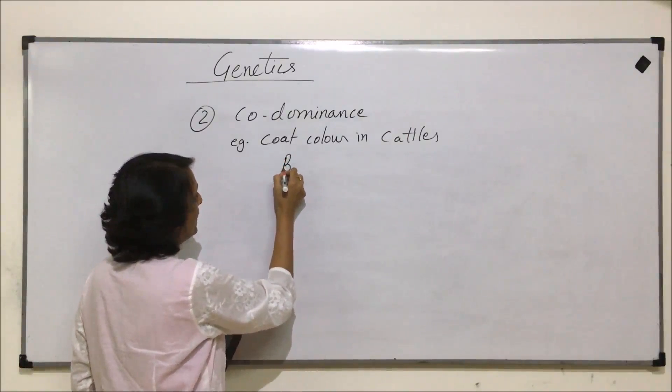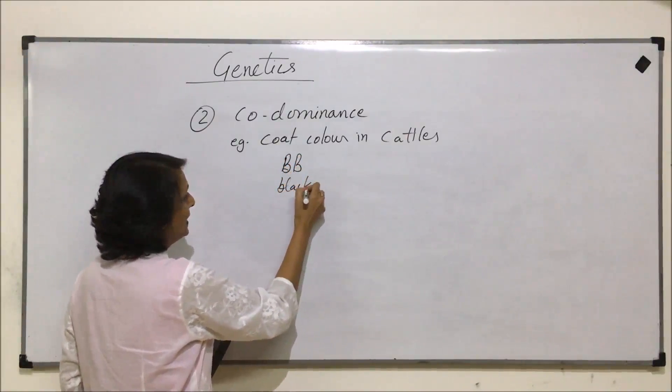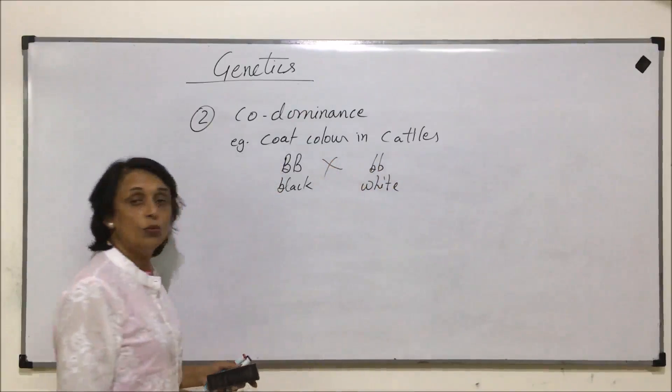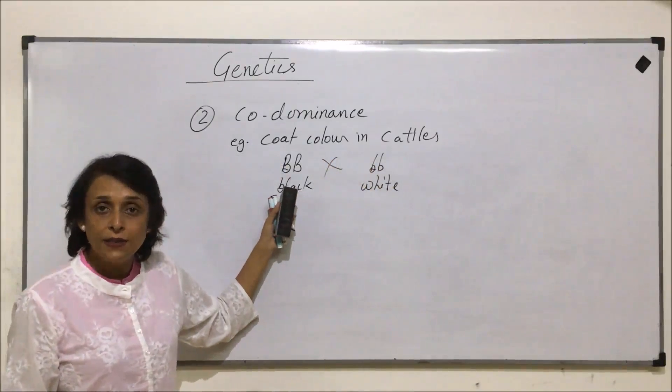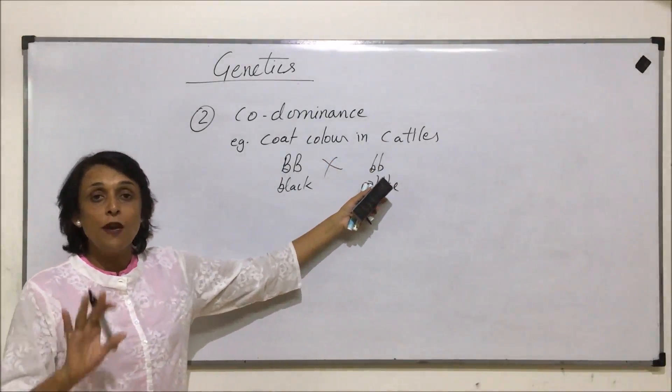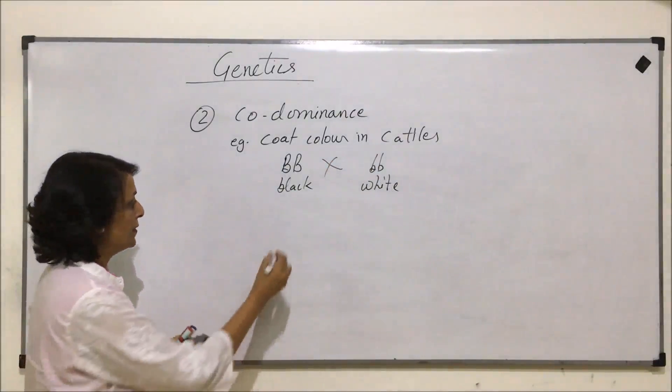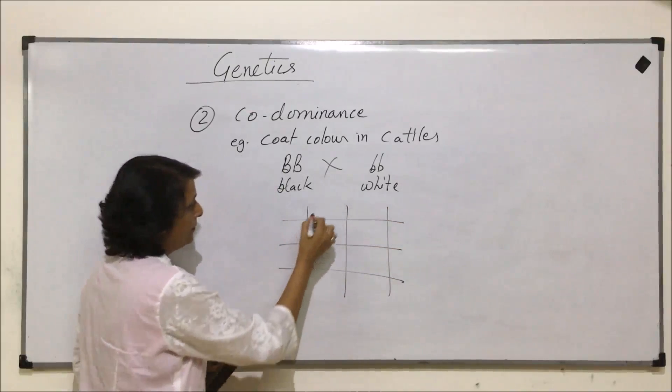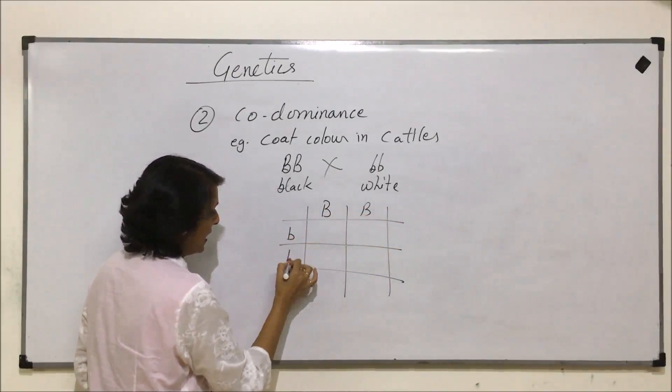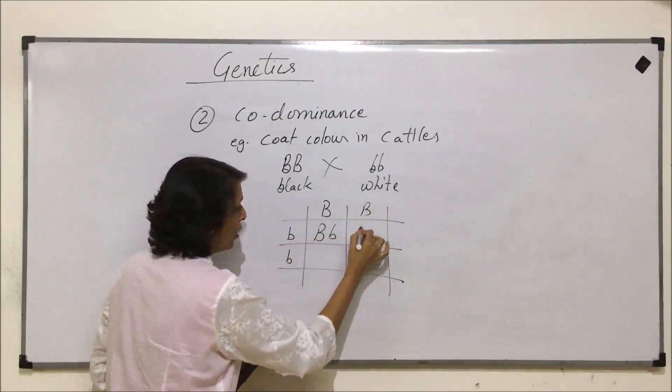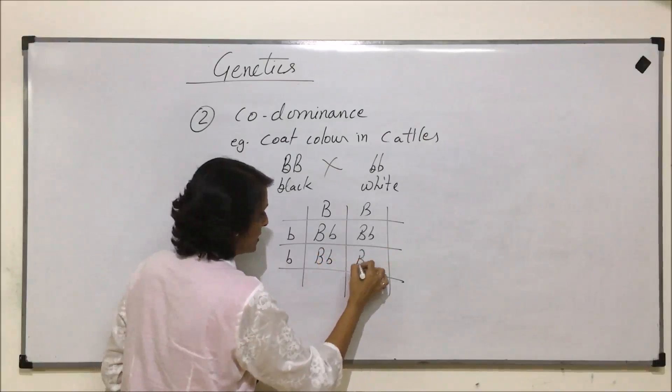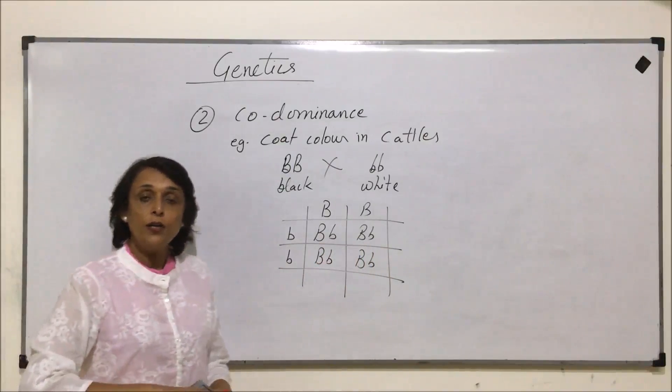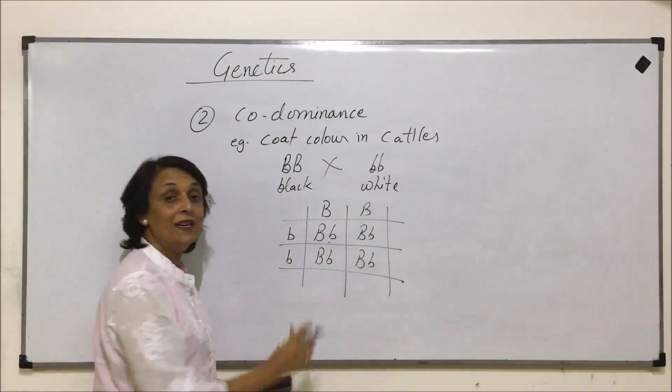If we start with black and white and cross these two, black is dominant (B) and white is recessive (b). If we go by Mendelian inheritance, the cross will produce heterozygous offspring. All four offspring will be heterozygous, and according to the law of dominance, this should have been black.